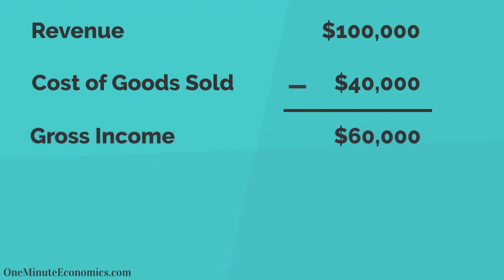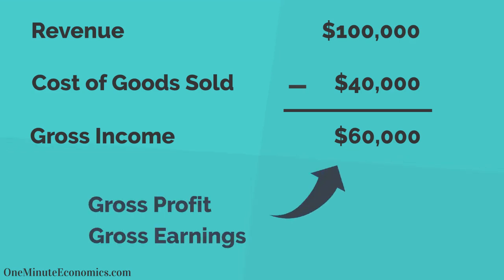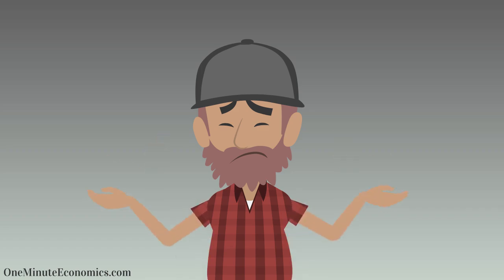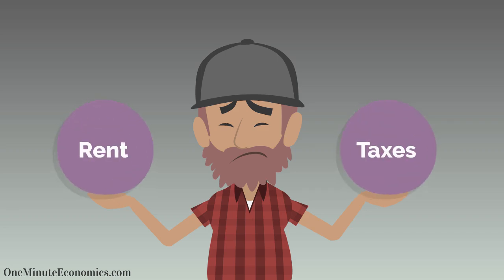After subtracting the $40,000 cost of goods sold from the $100,000 revenue, we are left with a so-called $60,000 gross income, also referred to as gross profit or gross earnings. Once again, however, he doesn't keep this amount either, because there are more than just direct costs involved.